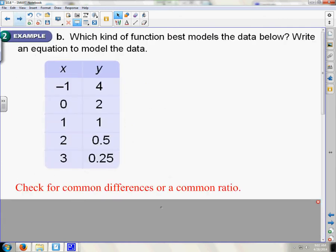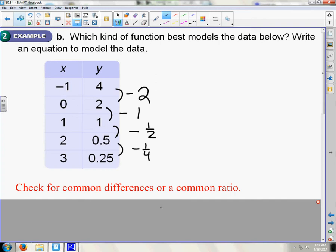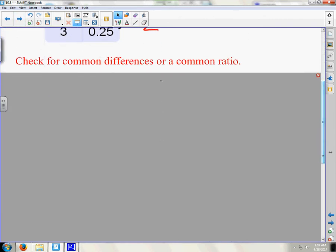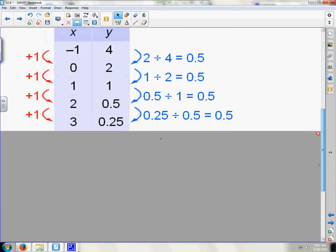What kind of function best models the data below? Write an equation. So, if I look at this, this is going minus 2, minus 1, minus 1 half, minus 1 quarter. And then my second difference. This has a difference of 1. This has a difference of 1 half. So, that's not the same. So, then I should know that it is an exponential function. This is getting divided by 2. Divided by 2. Divided by 2. And divided by 2. So, that is called a common ratio.